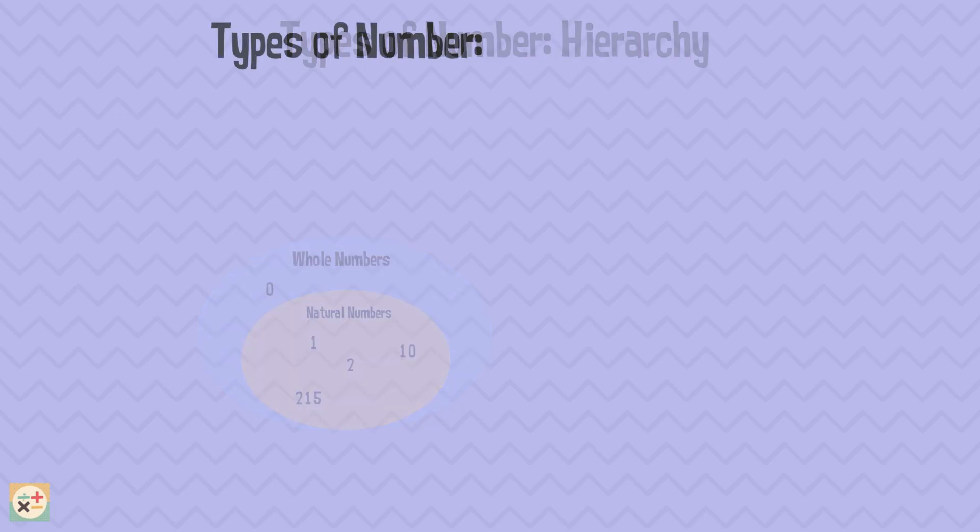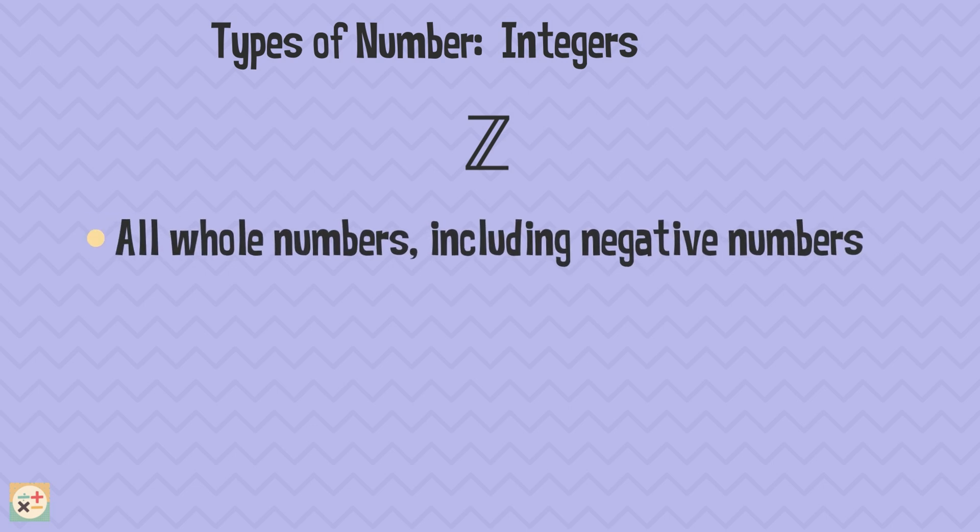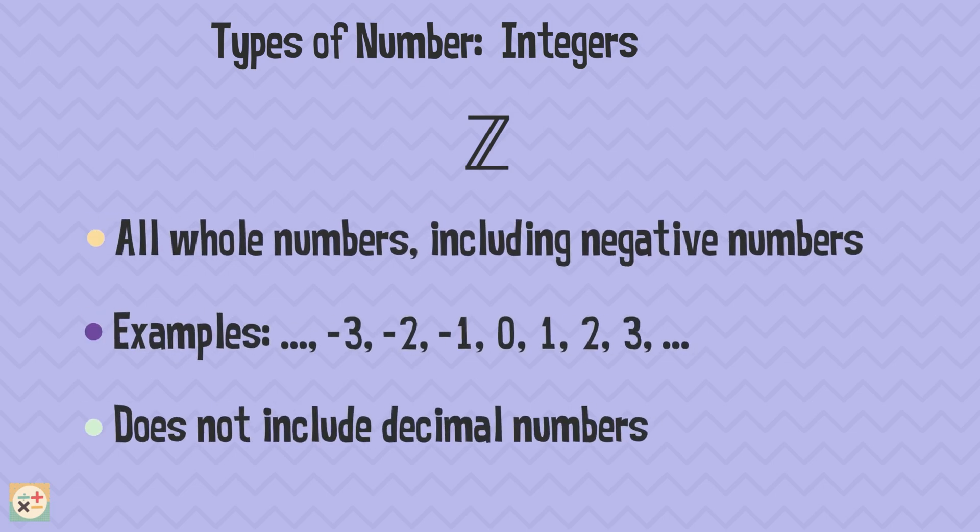Next, let's talk about integers. Integers take whole numbers and go one step further by including their negative counterparts. So now, we're looking at numbers like minus 3, minus 2, minus 1, 0, 1, 2, 3, etc.